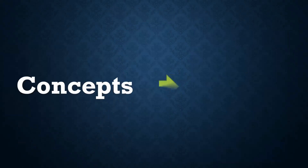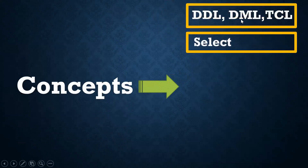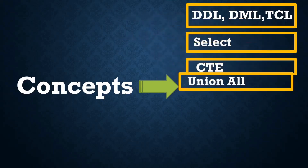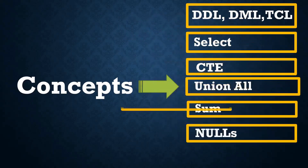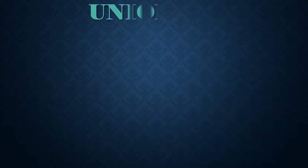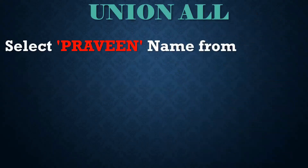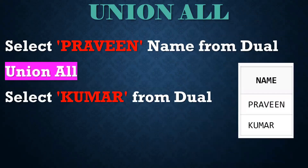To understand this concept, you should know the following: DDL, DML — create a table, insert some data, commit the transaction, select statement, CTE (common table expression), set operators like union all, aggregate functions, nulls, and column aliases. These are the concepts you need. If you know them, it is easy to solve this problem.